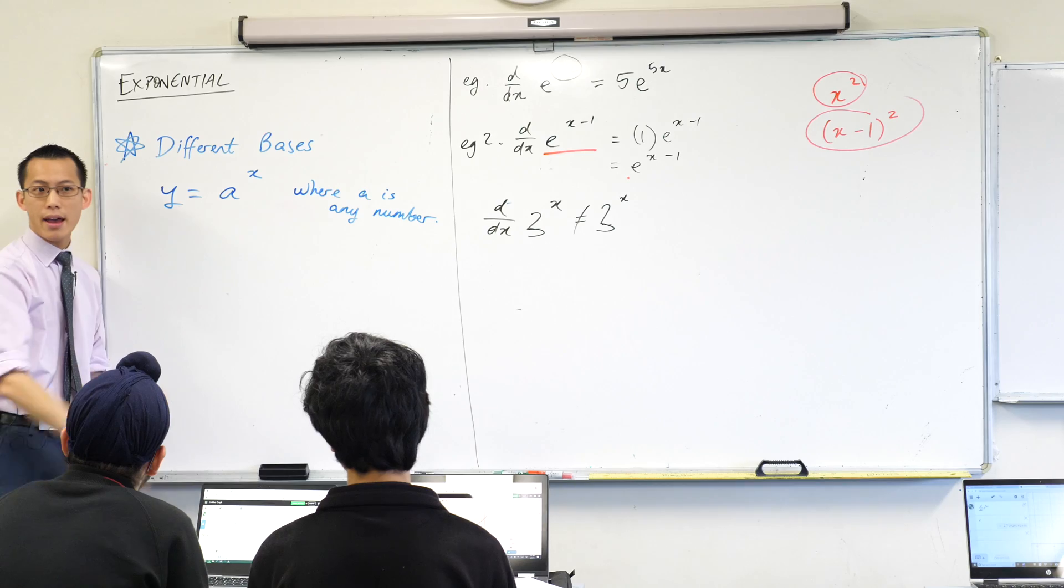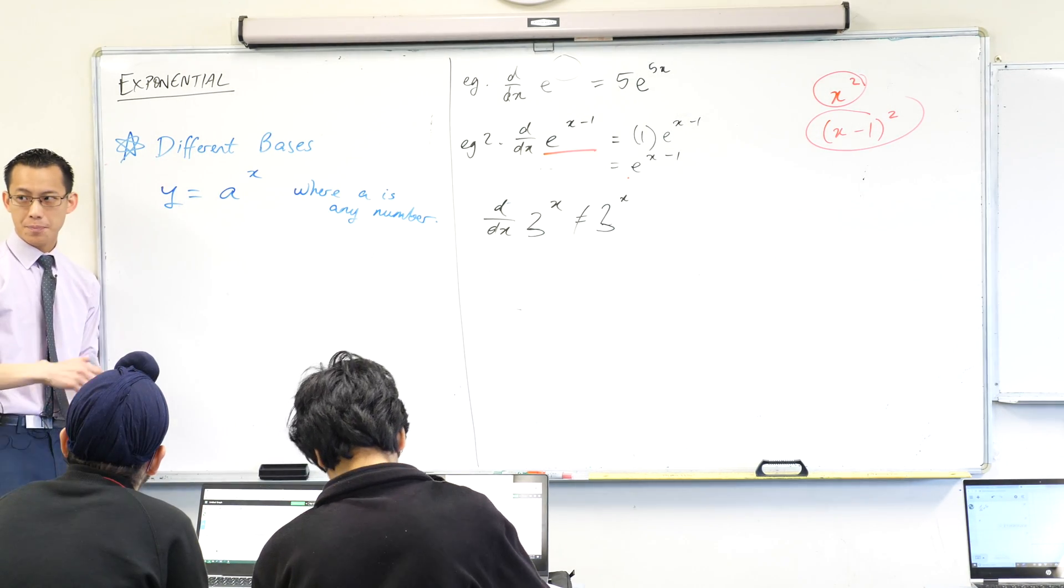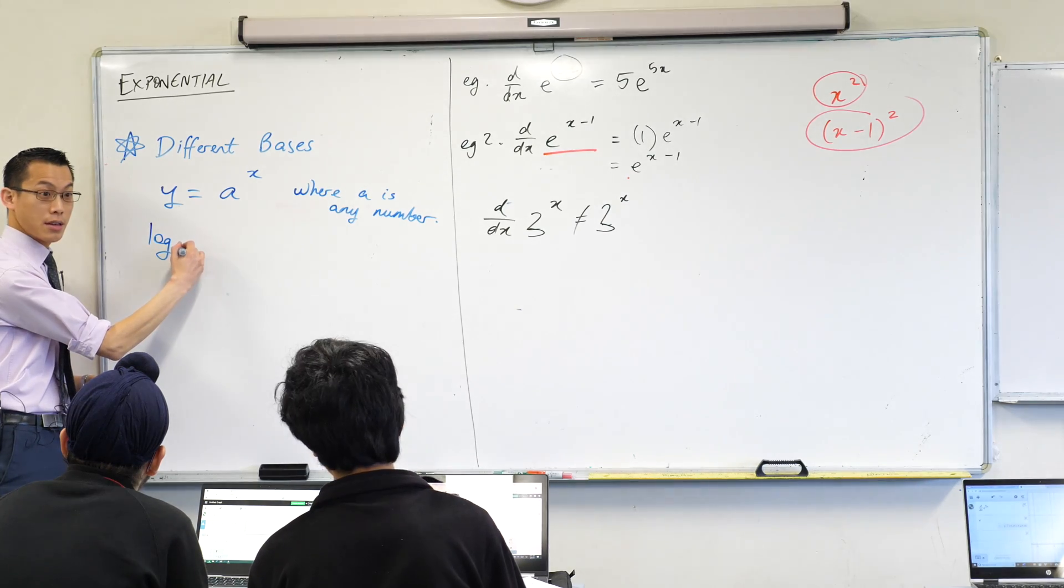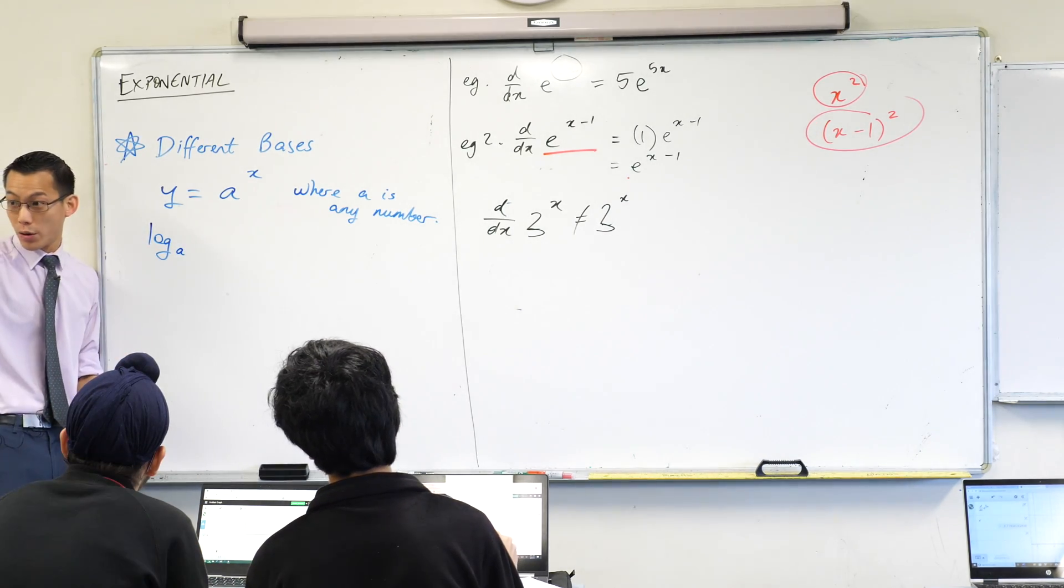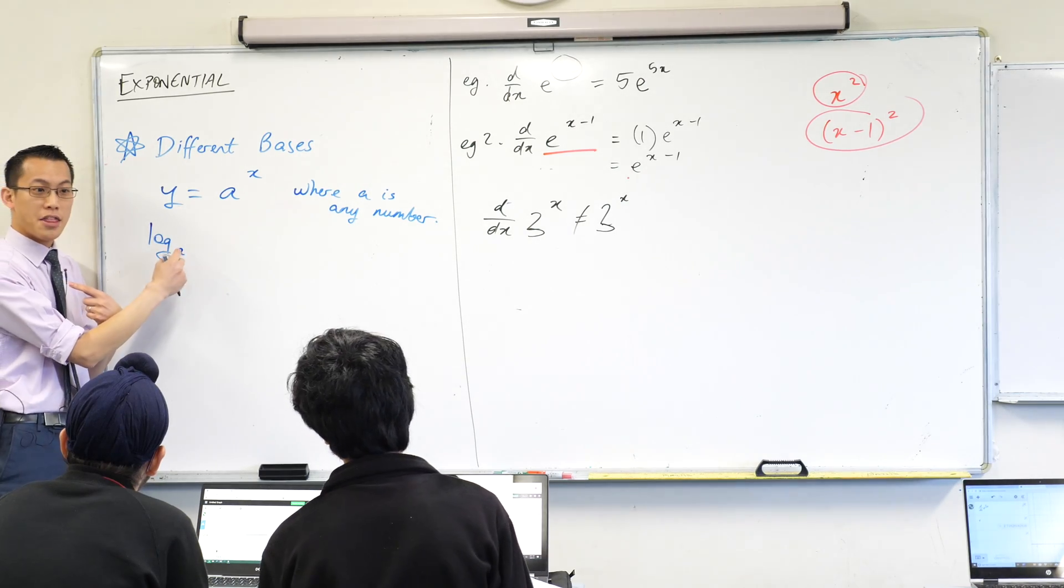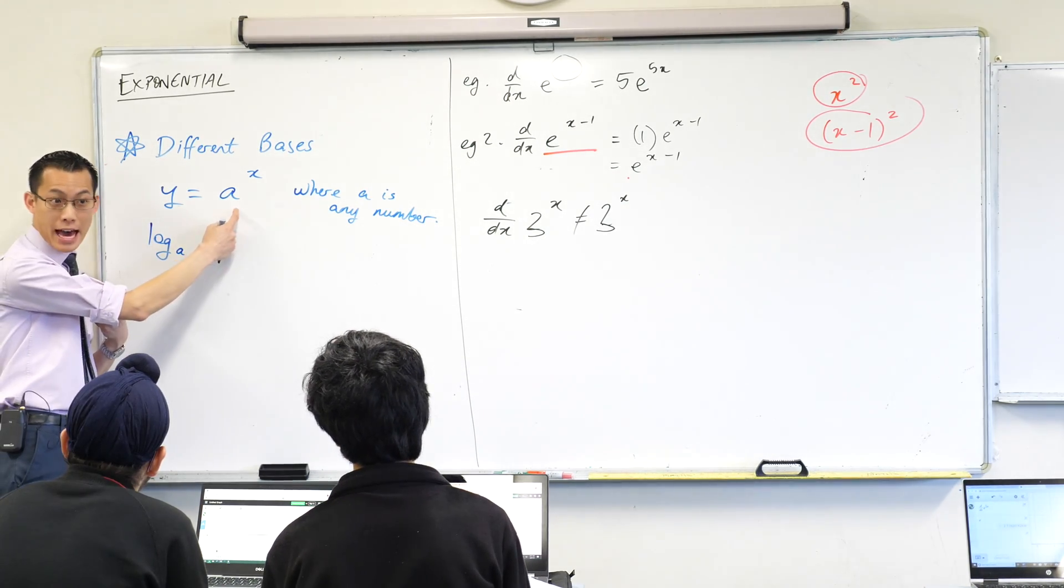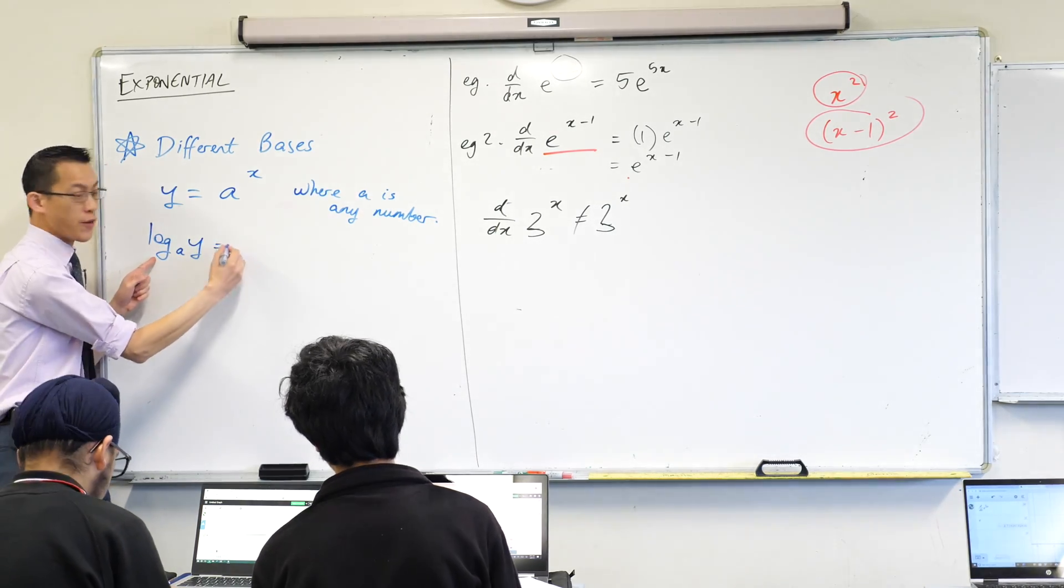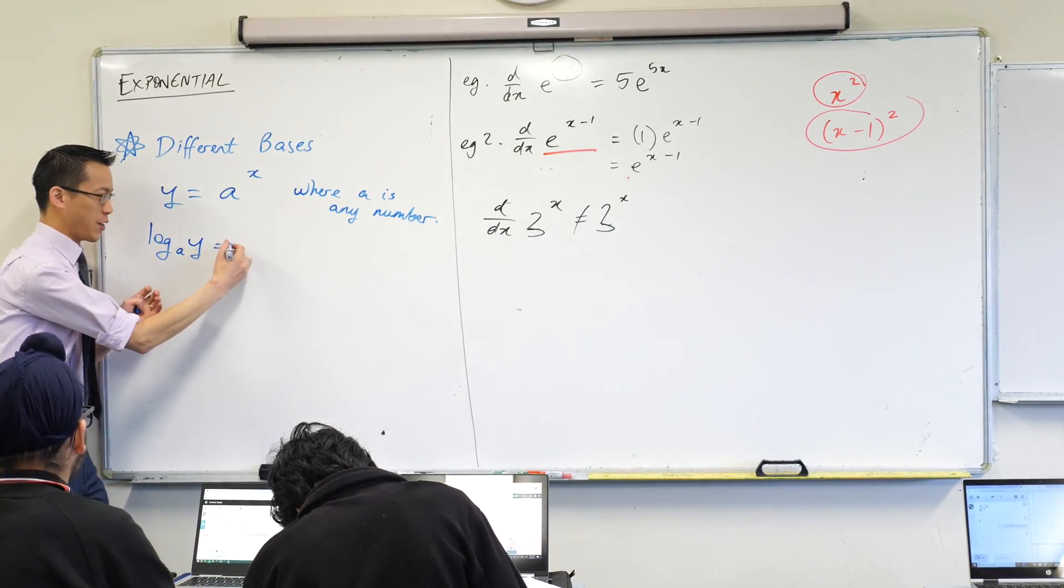How would I take this guy and write it with logs? Log a base a. One of the ways I remember what happens next is the base of this is the same as the base of that - that doesn't change. So then what's the next thing? y, very good. And then you've only got one number left - it's x, very good.